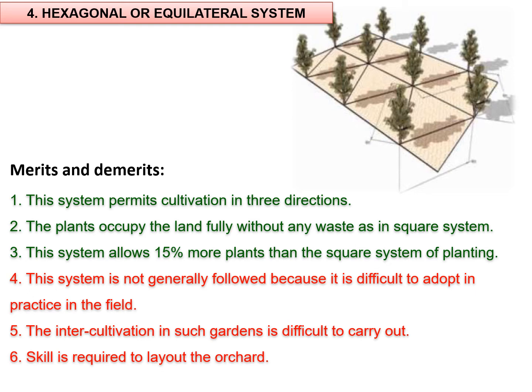This system is not generally followed because it is difficult to adopt in practice in the field. Inter-cultivation in such a garden is difficult due to the presence of the central tree, and special skill is required for the layout of this system.